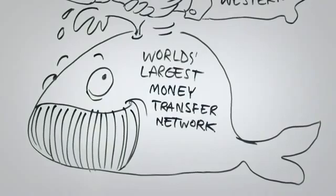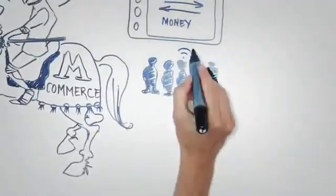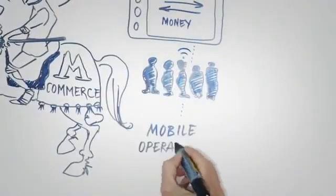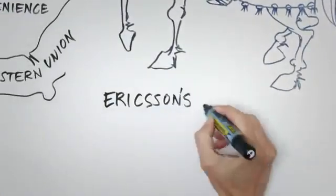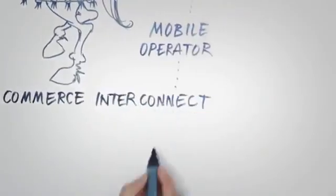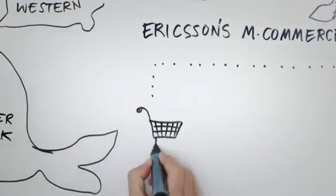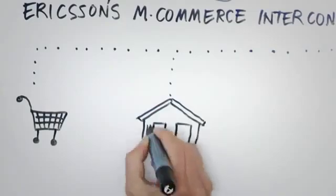350 billion dollars are transferred annually person to person over mobile devices, and the ecosystem to support m-commerce is growing rapidly. Ericsson's m-commerce interconnect is a technology that will allow interoperability between operators and service providers such as banks, stores, and payment networks.